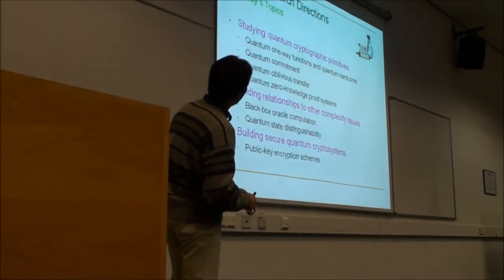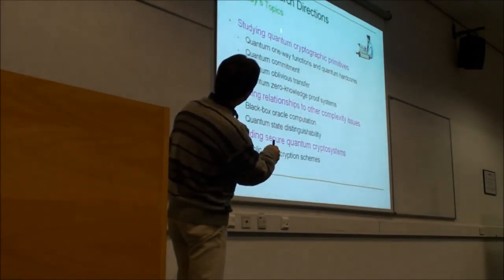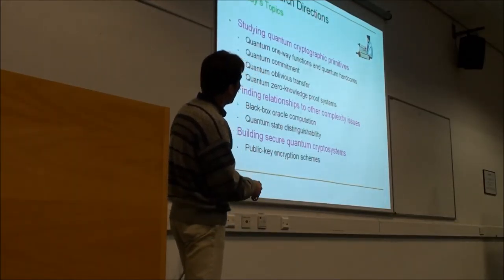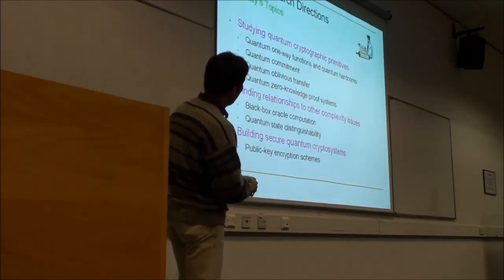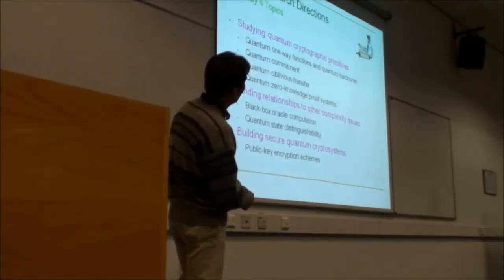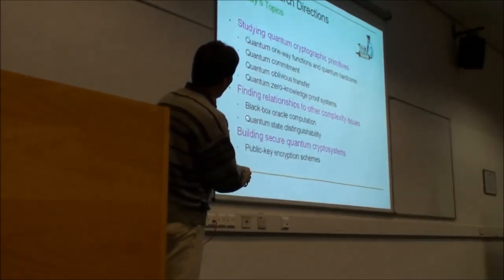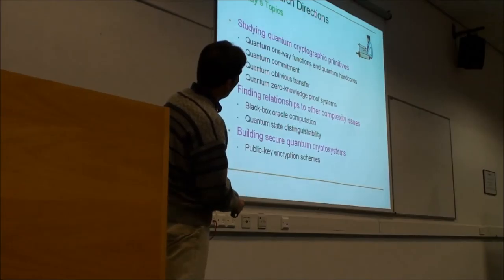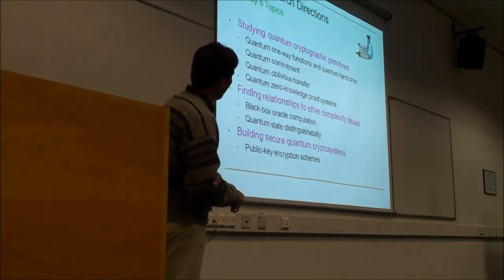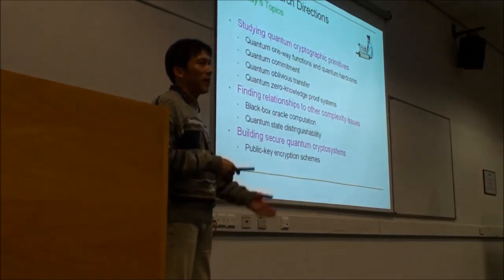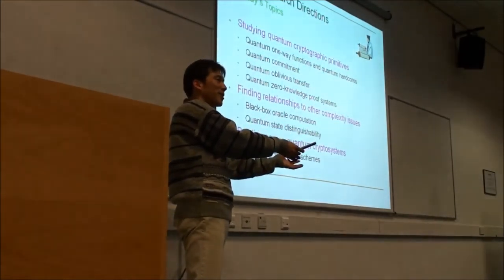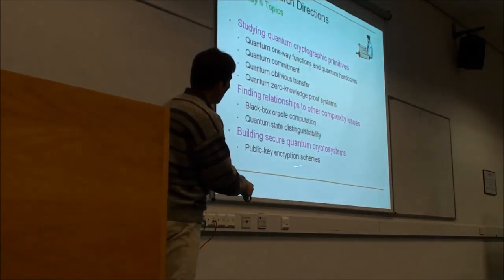Future directions might correspond to further study of quantum cryptographic techniques — not necessarily just public key encryption, but also quantum oblivious transfer, zero-knowledge proof systems, and so on. We also need to think about relations among complexity classes: if the distinguishing problem is solvable in polynomial time on a quantum computer, then the corresponding classical problem is also solved.